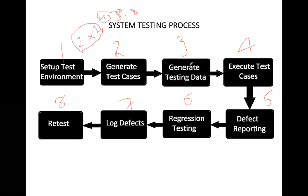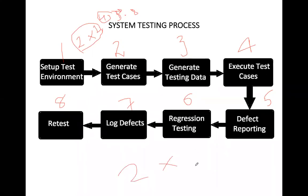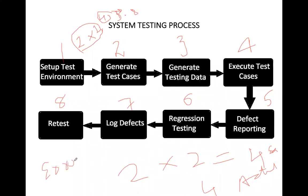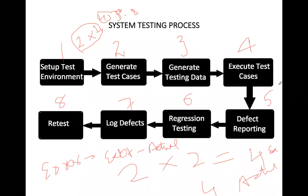After generating test cases, we generate the test data for the test cases. After generating this data, we start executing the test cases — this can be done manually, but automation is much better. After executing the tests, the output is compared with the expected output. Error is defined as the difference between expected output and actual output. If there is a defect in the system, we report it and create an organized document.